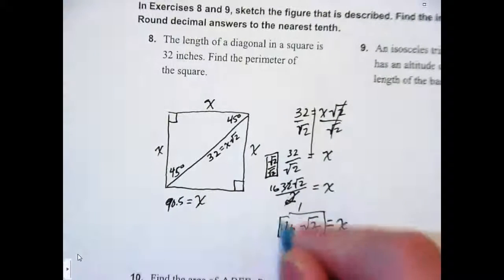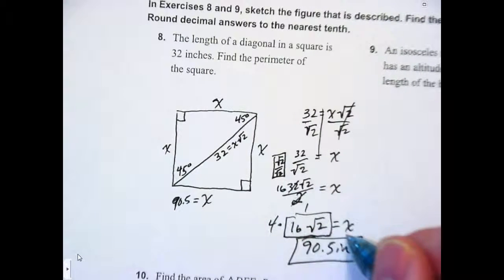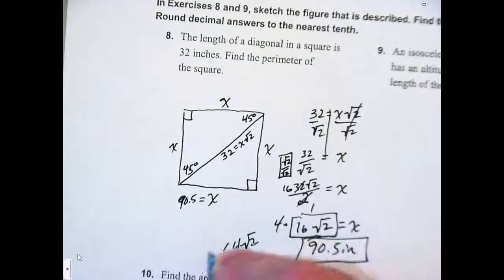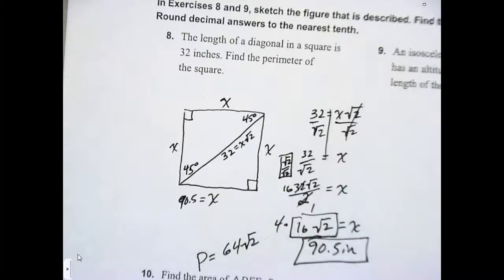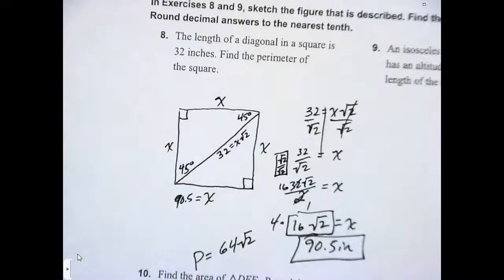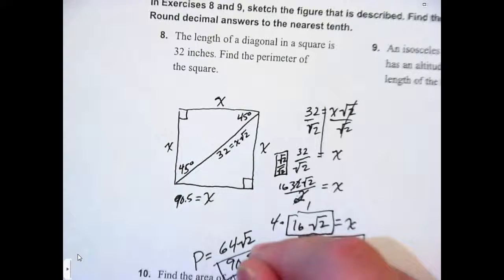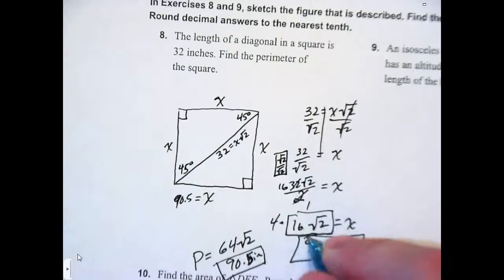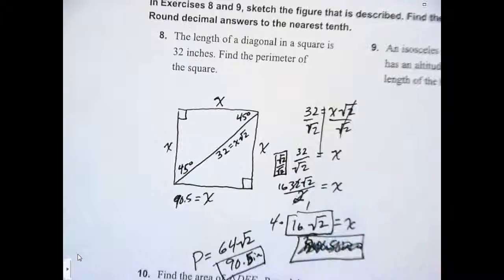So actually, we shouldn't round it until we multiply by 4. KJ, I'm glad you're here. So 4 times 16 is 64. 64 root 2. What's 64 root 2? That would be our perimeter. We have 4 of those sides. 90.5 inches. This was the actual perimeter. It's just that's not that rounded side length. 90.5 inches. Thank you for pointing that out, KJ.